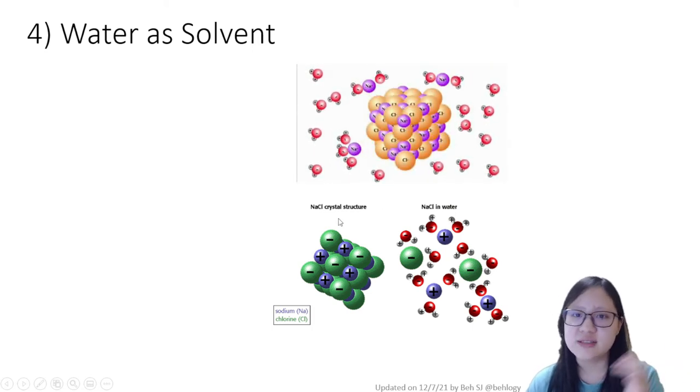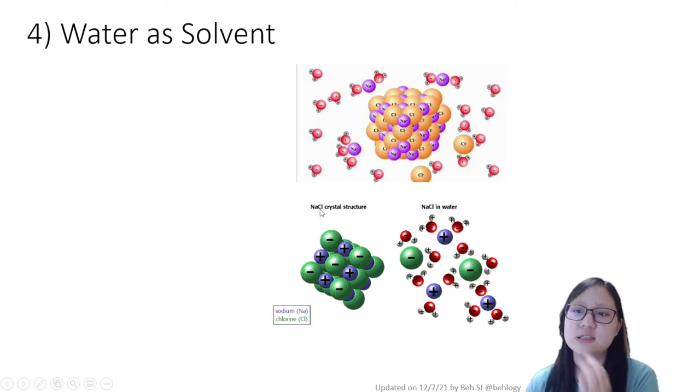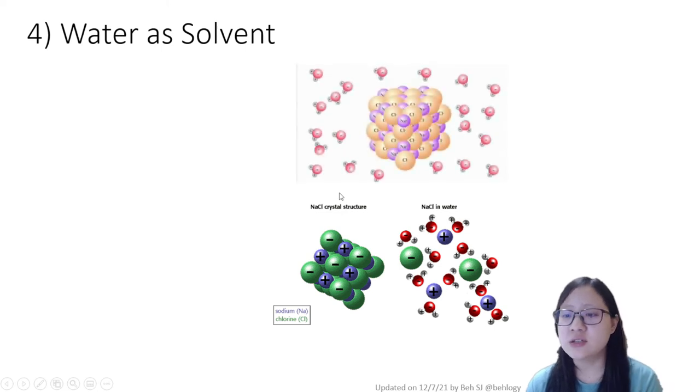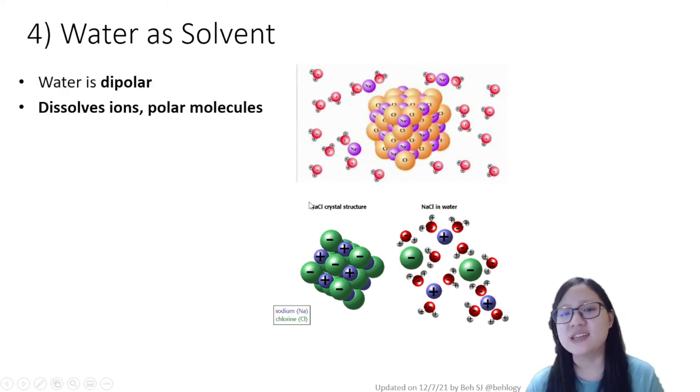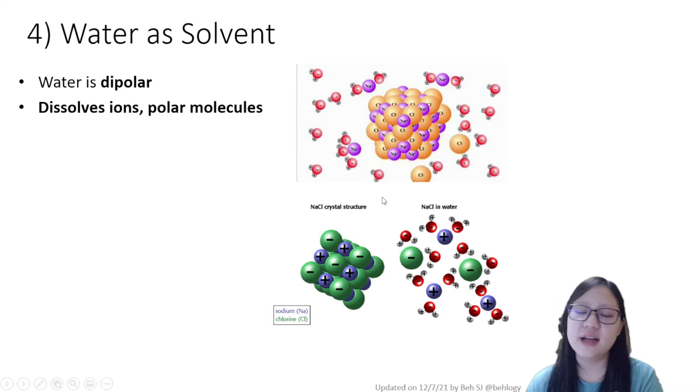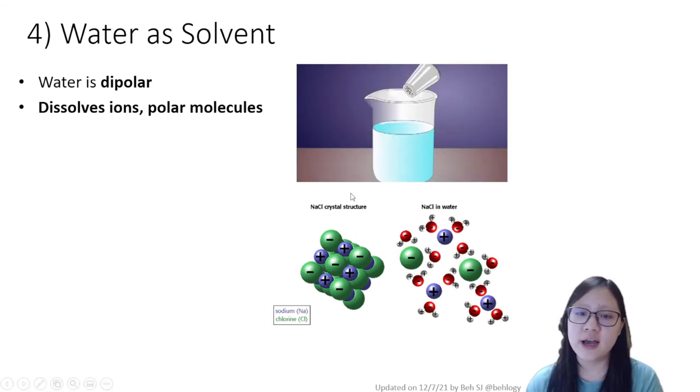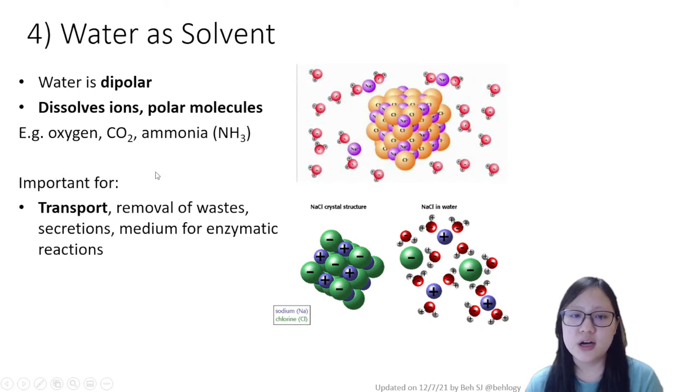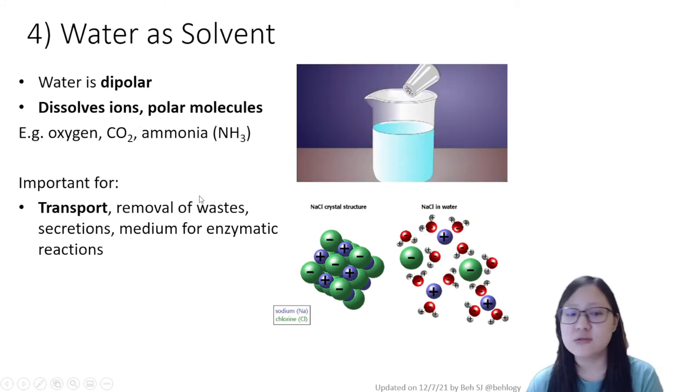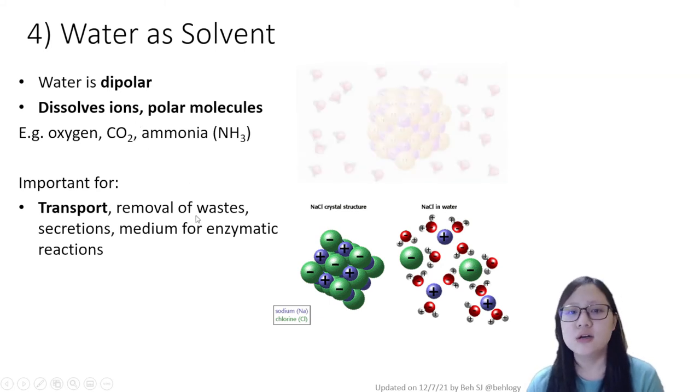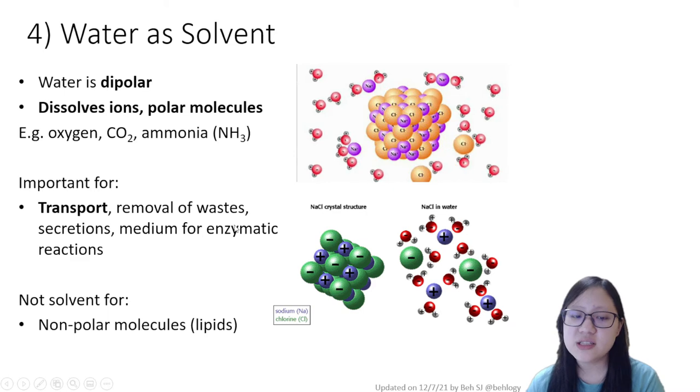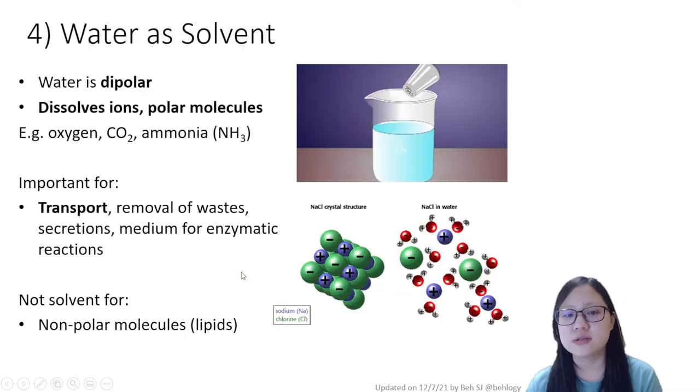Now water as a solvent is mostly not due to its hydrogen bonding but because it is dipole - slightly positive on the hydrogen side and slightly negative on the oxygen side. This allows it to dissolve ions and polar molecules like oxygen, CO2, and ammonia. This is great because it needs to dissolve in order to be transported, especially in the blood. However, it's not a solvent for non-polar molecules.